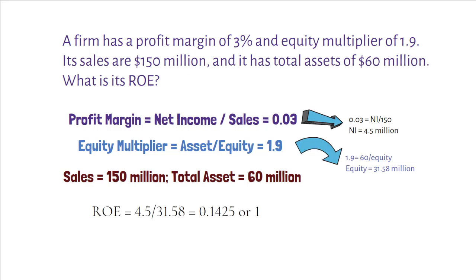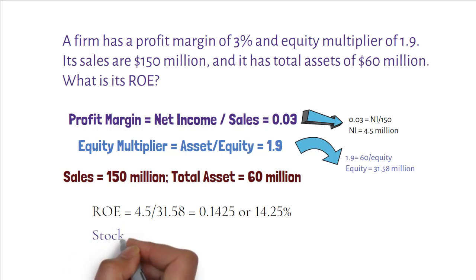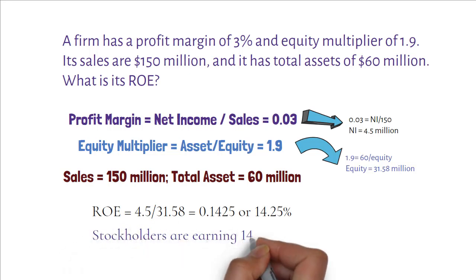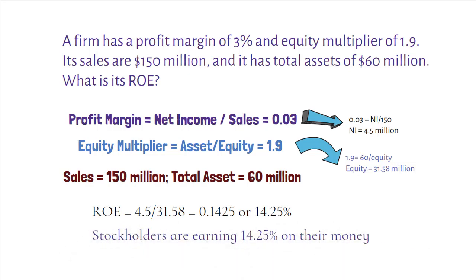Finally, the ROE equals 4.5 over 31.58, or 14.25%. This means that stockholders are earning 14.25% on their money. To determine whether it's a reasonable return on capital or not, you need to compare this with the industry average ROE ratio.